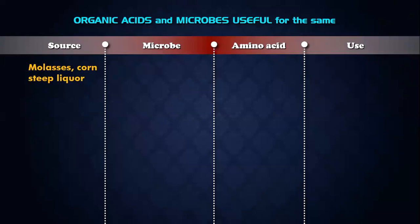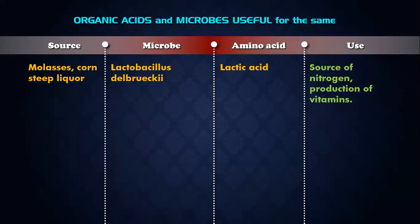Then, molasses and corn steep liquor as the source; the microbe used is Lactobacillus delbrueckii. The organic acid you get is lactic acid, which is used as a source of nitrogen and also for production of multivitamins.